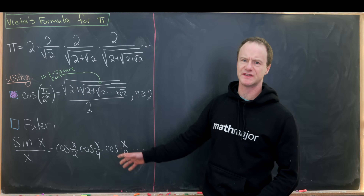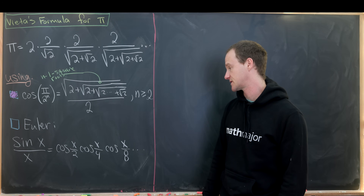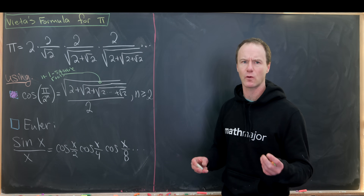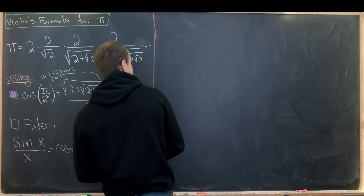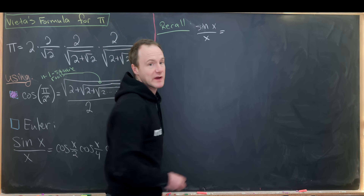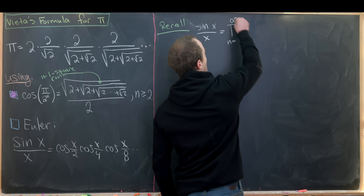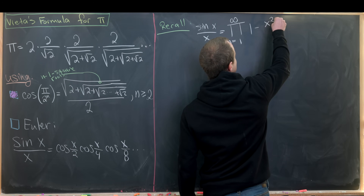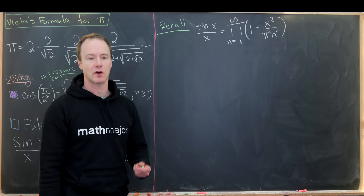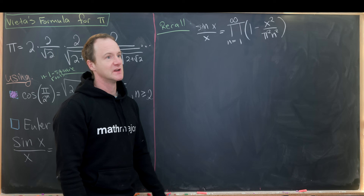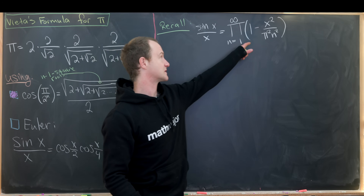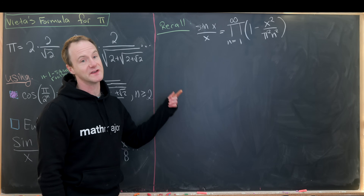Now we move to the second result: the product expansion of sine x over x. We'll use two well-known expansions. First, recall that sine x over x equals the infinite product as n goes from 1 to infinity of (1 minus x² over π²n²). This is motivated by the fact that the roots of sine x over x are exactly the nonzero integer multiples of π — plus or minus π, plus or minus 2π, plus or minus 3π — and multiplying those factors gives this difference-of-squares form.